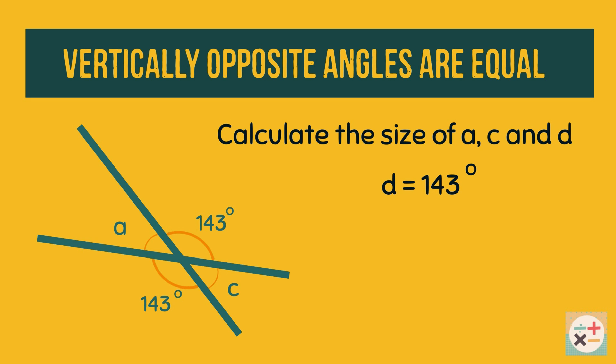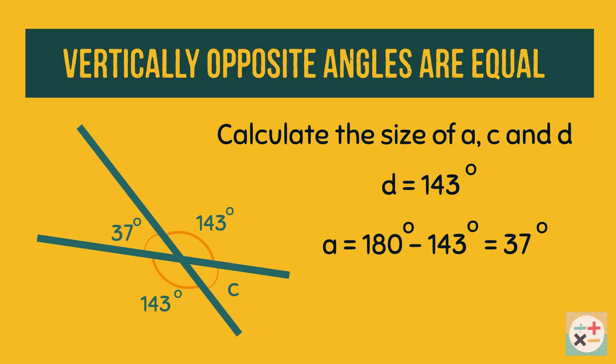We can also calculate angle A, knowing the rule that angles on a straight line add up to 180 degrees. Finally, as angle C is vertically opposite the 37-degree angle, it is also equal to 37 degrees.